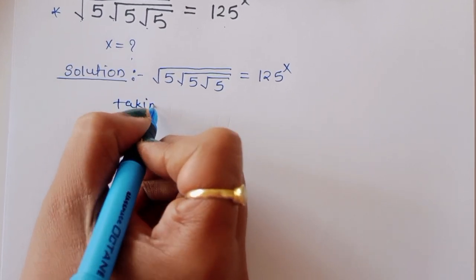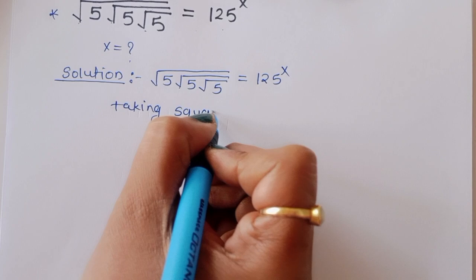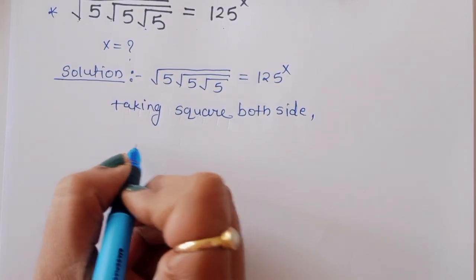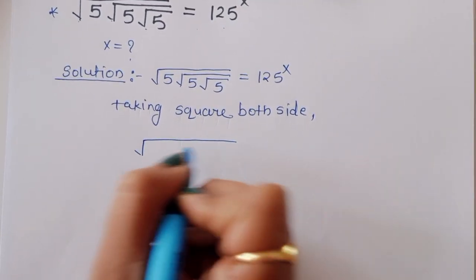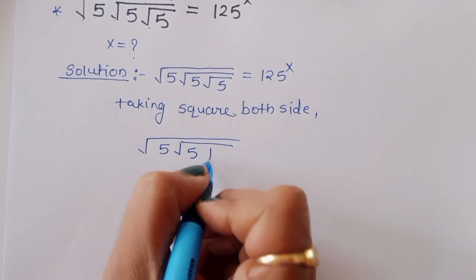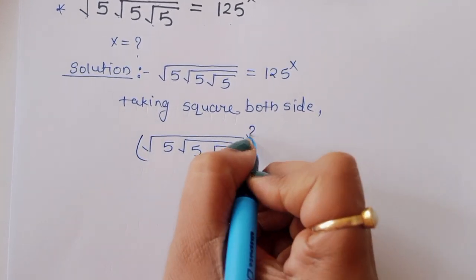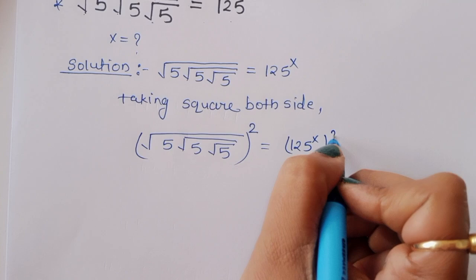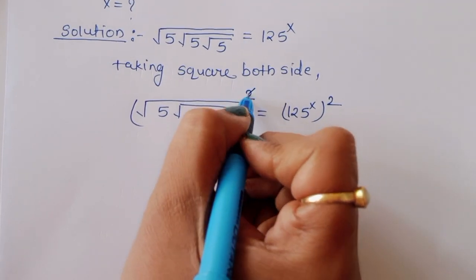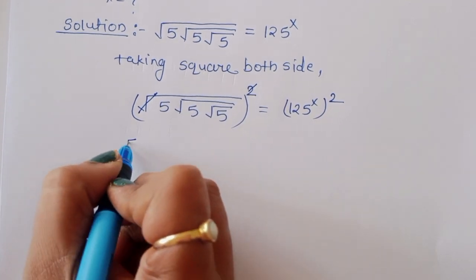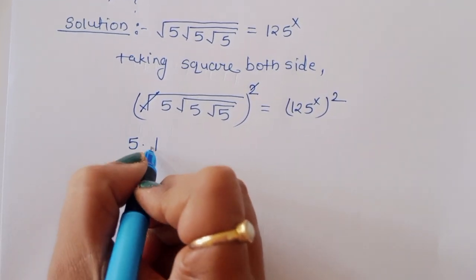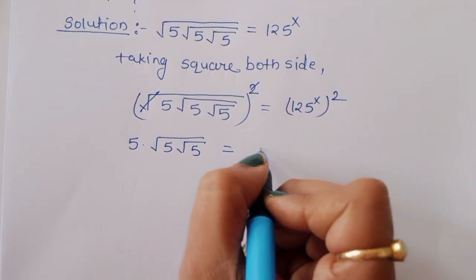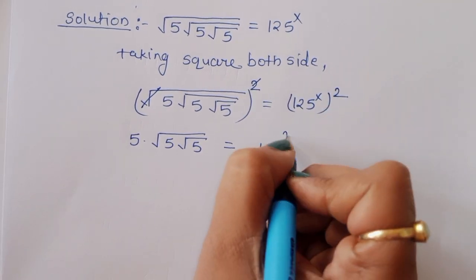Now, taking square on both sides, we will get square root of 5, square root of 5, square root of 5 squared is equal to 125 raised to x squared. Now this will cancel here, so we can say 5 times square root of 5, square root of 5 is equal to 125 raised to 2x.